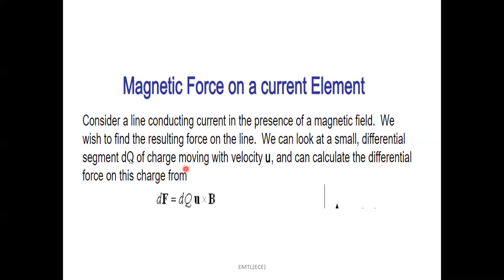Let us take a small differential segment dQ — that is a small charge on the line conducting current — and it moves with a velocity U. Then the differential force on this charge is expressed using the magnetic force expression F = Q(V × B). Here, we take the smallest charge dQ and velocity U. The corresponding smallest differential force is dF. According to the magnetic force expression, the force on dQ charge moving with velocity U is expressed as dF = dQ(U × B).